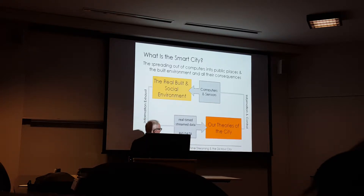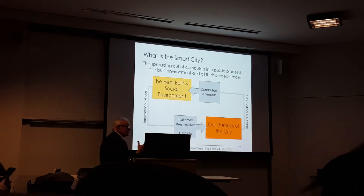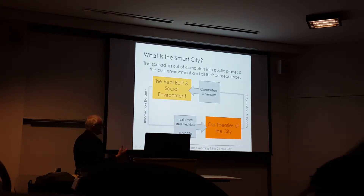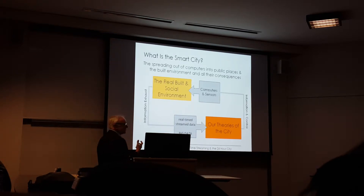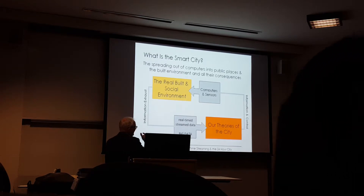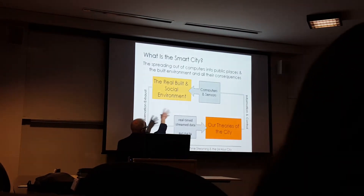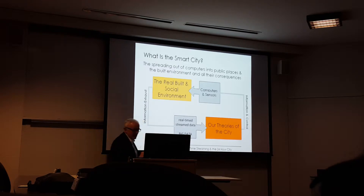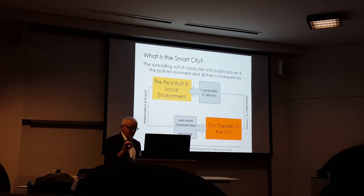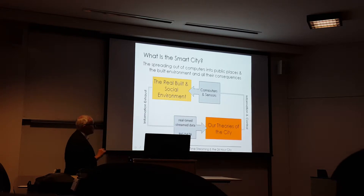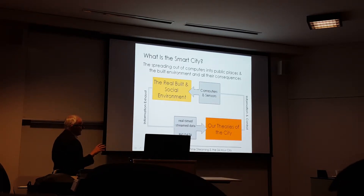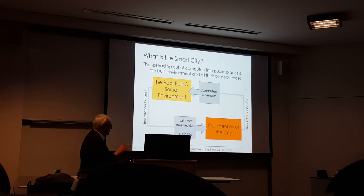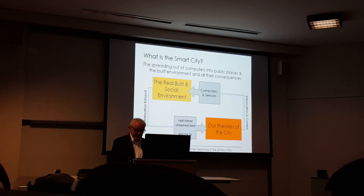That's very important because the first point about big data is that invariably it's unstructured. There's no structure to it. Unlike population or household surveys and transportation surveys where there's real structure — we put the structure in. In terms of real-time stream data, the structure really pertains to the kind of sensing that goes on, and we get this as information exhaust. Invariably, not always, but invariably it's unstructured, and that means we have to inject our own structure on it.